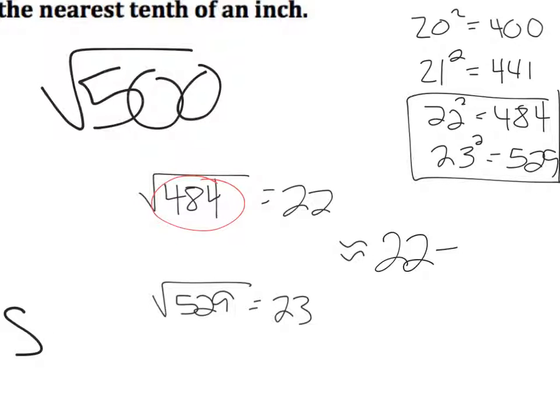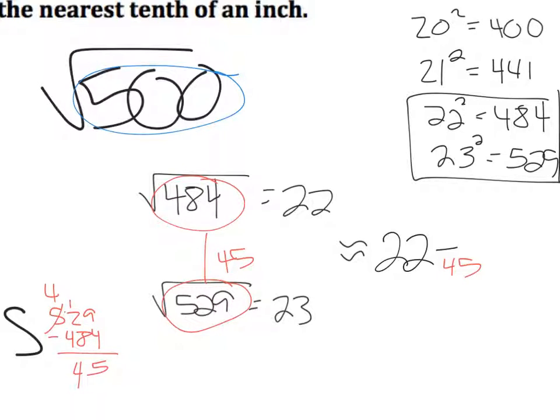The difference between these perfect squares, how far apart are those from each other? Well, I need to subtract those on the side, so I would do 529 minus 484. 45 apart. So that is your denominator. Your numerator would be how far is 500 from whichever is closer to 0. 22 is closer to 0, so 484 would be the one that I'm finding that distance between. These two are 16 apart.